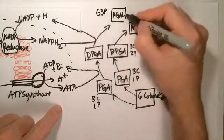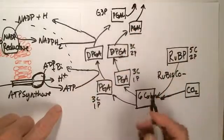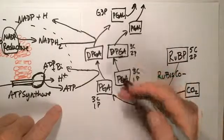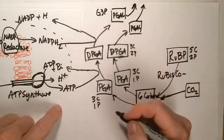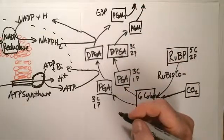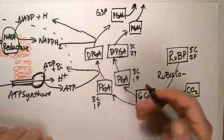but this is a point where these molecules can jump out of the cycle, be pulled out of the cycle, and move on to form glucose. Now, in plants, glucose can be stored as starch.